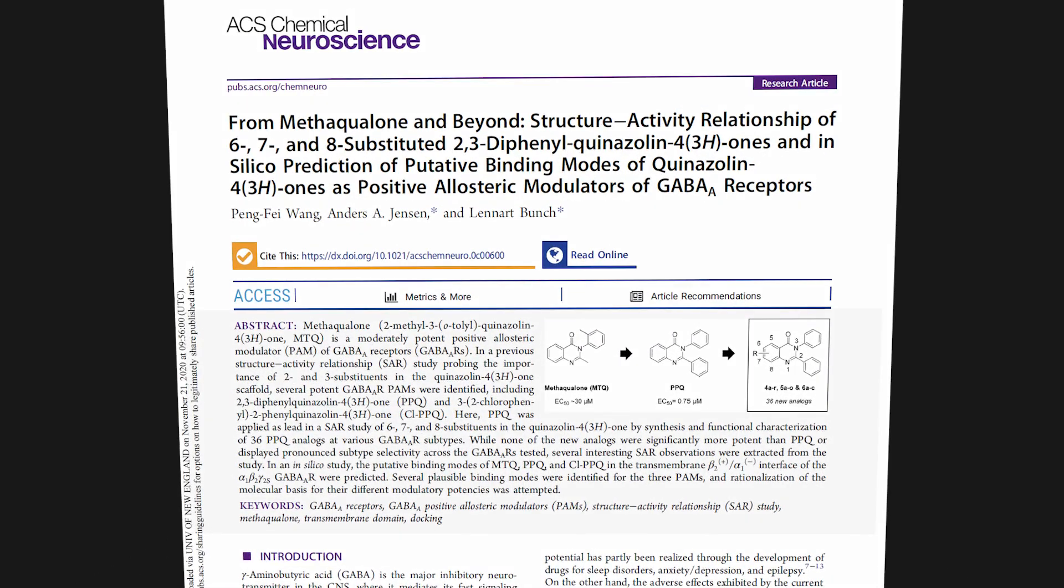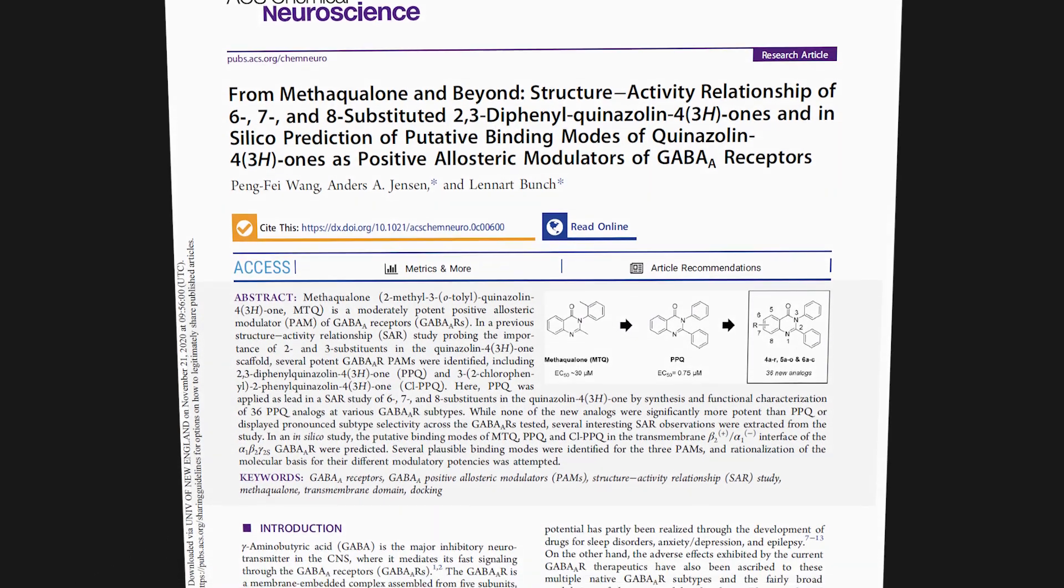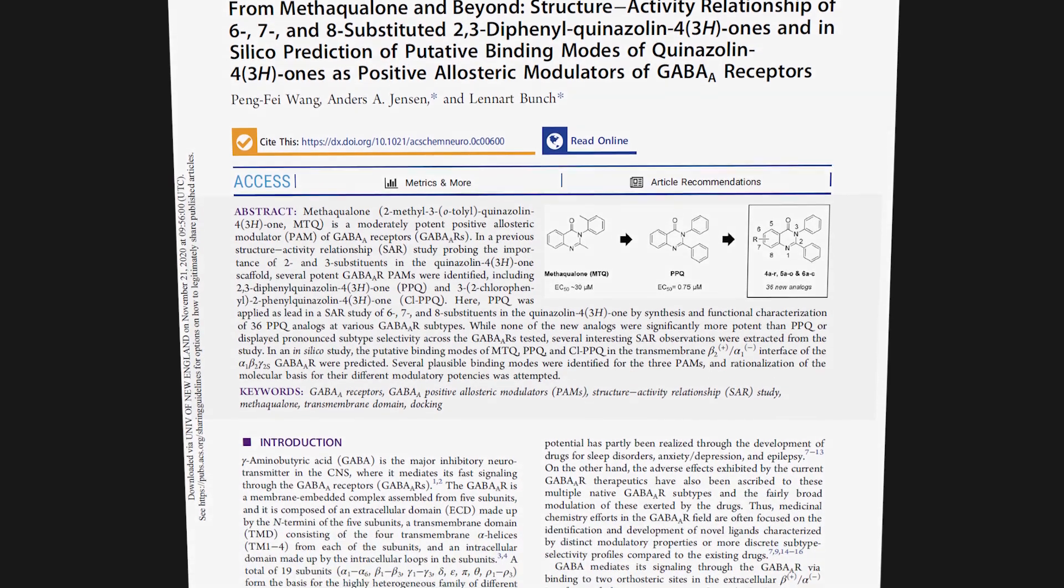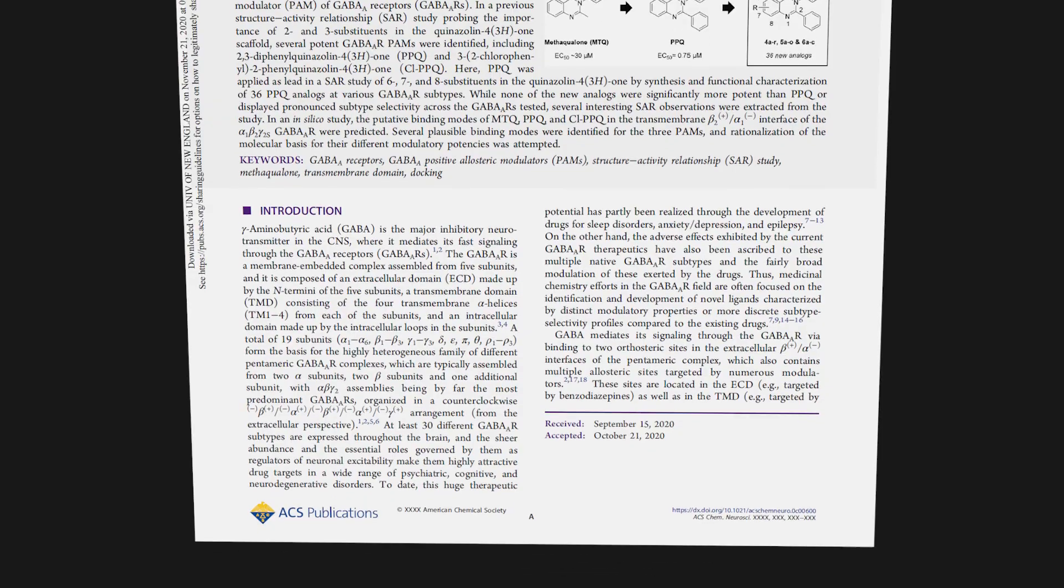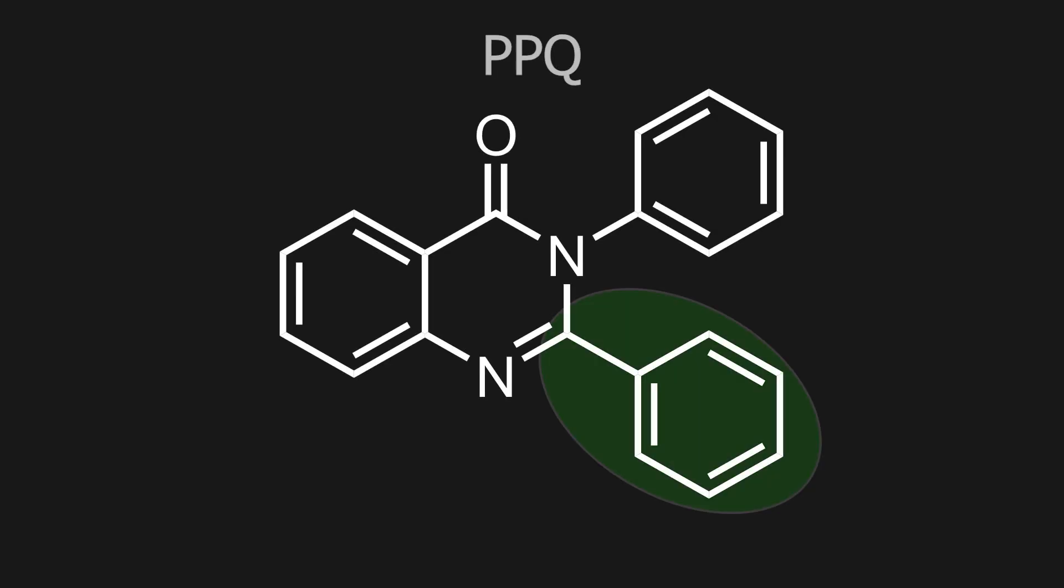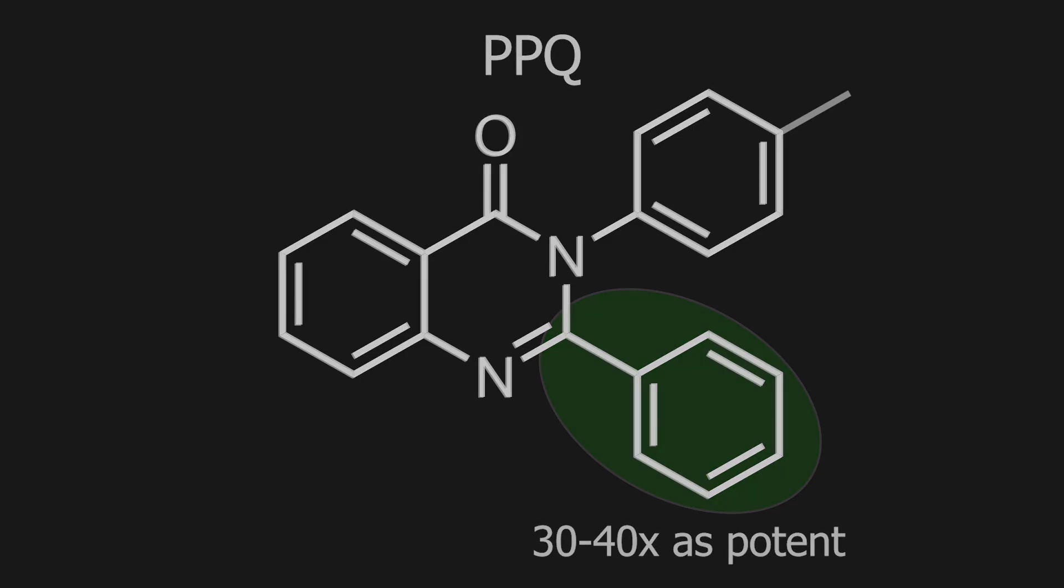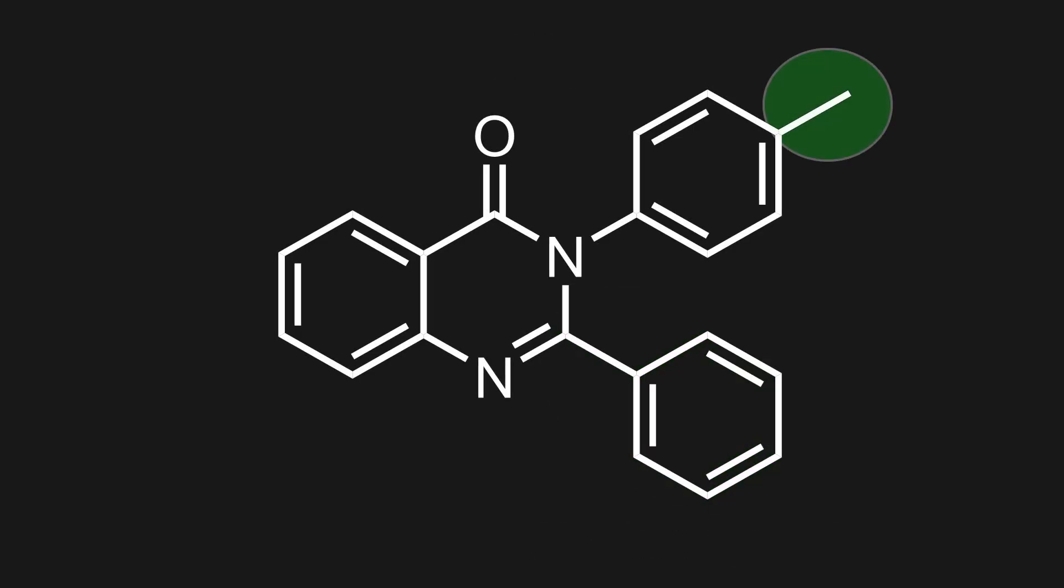Recently, Quinazoline King sent me this paper from 2020, which investigated 67 new methaqualone derivatives, featuring a 2-phenyl substituent instead of the normal methyl. This simple introduction of a 2-aryl substituent was found to lead to a significant increase in GABA modulation, an increase of 30 to 40-fold in potency compared to methaqualone. Further, introducing a methyl group at the 4' para position increased the potency another 3 to 4 times, which piqued the interest of the researchers.